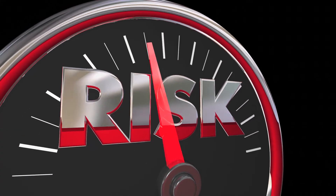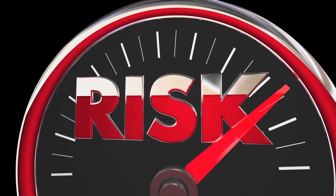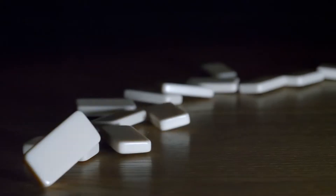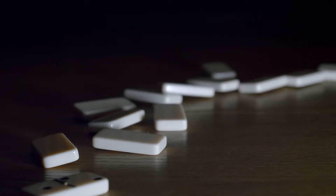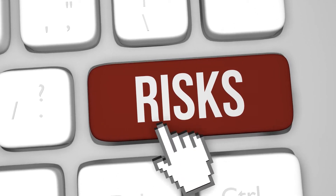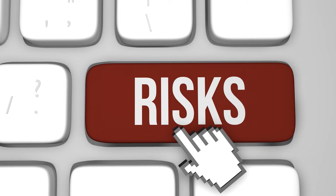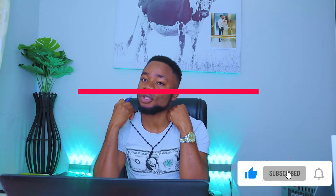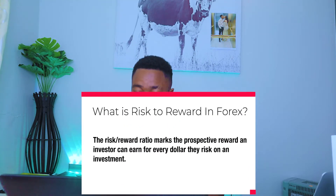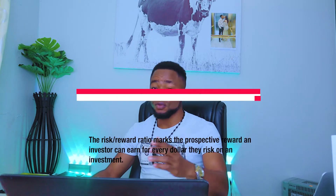A risk-to-reward of 1:2 means for every dollar you risk, you're targeting two dollars — that's where you start being a profitable trader. A risk-to-reward of 1:3 means if you place a trade and risk one dollar, with your stop loss set so that if the trade goes against you you lose one dollar, and if it goes in your favor you gain three dollars. That ability to risk one dollar and target three dollars is what they call a risk-to-reward of 1:3. Risk-to-reward simply measures how much you risk in a trade compared to how much you can gain.